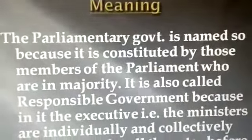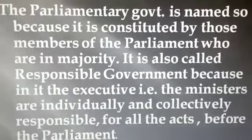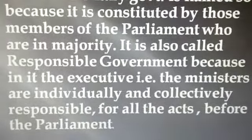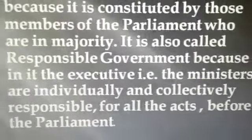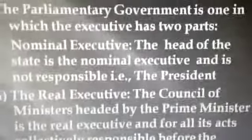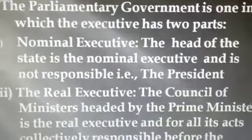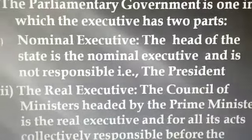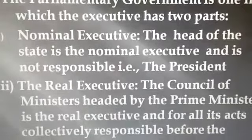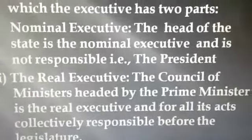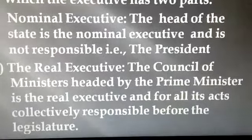Let's understand what is parliamentary government. It is named so because it is constituted by those members of the parliament who are in majority. It is also called responsible government because in it the executive, i.e. the ministers, are individually and collectively responsible for all their acts before the parliament. The parliamentary government is one in which the executive has two parts: nominal executive and real executive. The head of state is the nominal executive, i.e. the president. The council of ministers headed by the prime minister is the real executive and is collectively responsible before the legislature for all its acts.